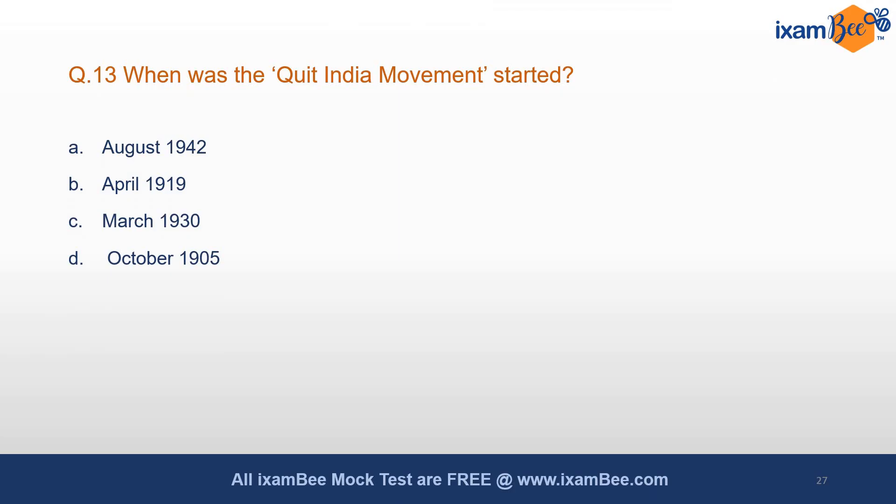When was the Quit India Movement started? The answer is August 1942. These landmark events in India's freedom struggle — their dates must be noted. For example, the Dandi March was in 1930.